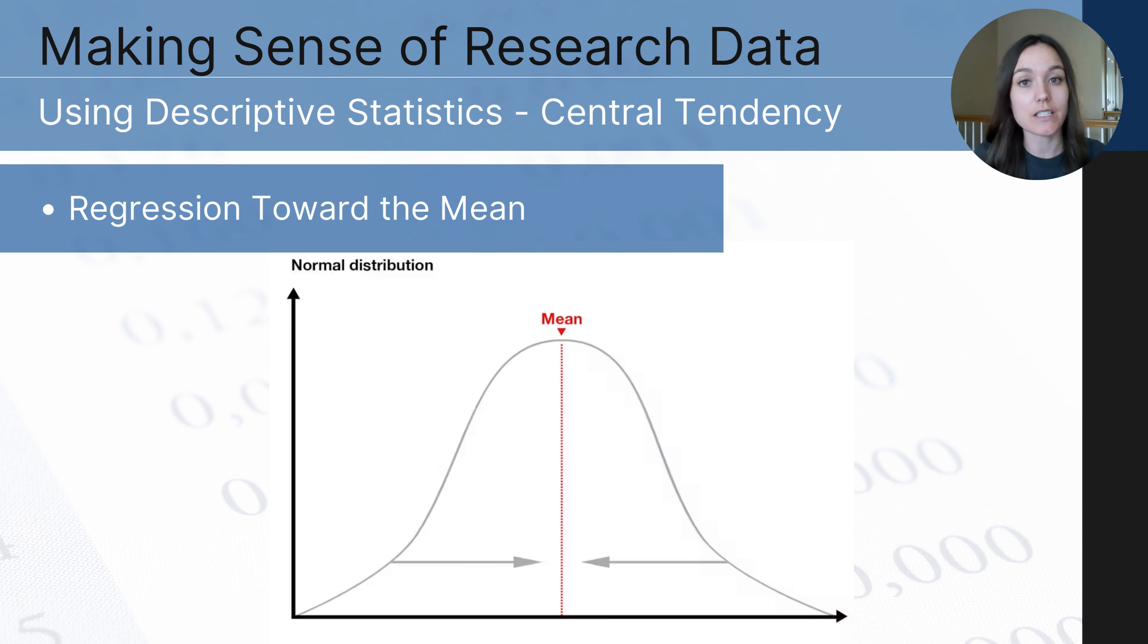Another factor to take into consideration when evaluating a set of data is regression toward the mean. This is a statistical phenomenon that occurs when you have a couple of extreme values in a data set. What happens is when you test or re-measure, sometimes that particular outlier will come closer to the mean.